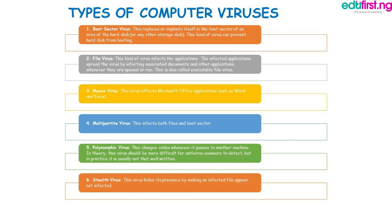The third type is the macro virus. The macro virus affects Microsoft Office applications such as Word and Excel. Another type is the multi-partite virus — the multi-partite virus infects both files and the boot sector.